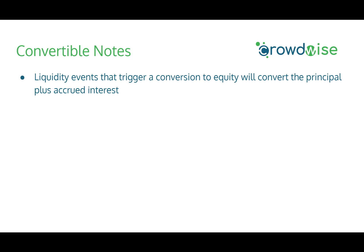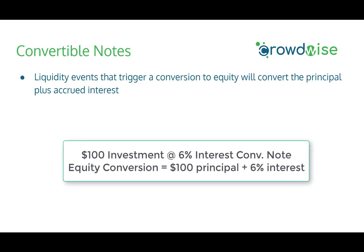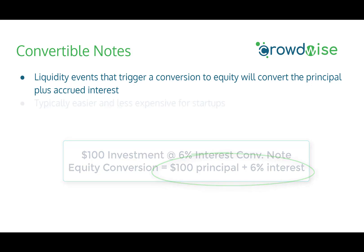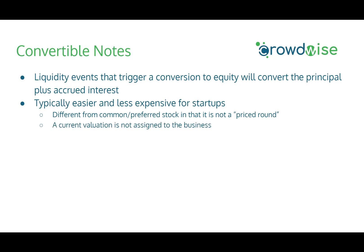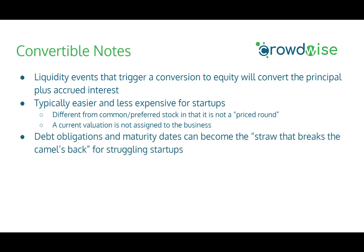It's important to remember that a liquidity event triggers the conversion, and at that time it converts the principal amount plus all accrued interest. So if you invested $100 with 6% interest, the full amount converted to equity would include that interest. Convertible notes are typically used because they're easier and less expensive for startups — it's not a priced round, so a formal current valuation isn't assigned. However, a potential drawback is that debt obligations from interest and maturity dates can become problematic for struggling startups.